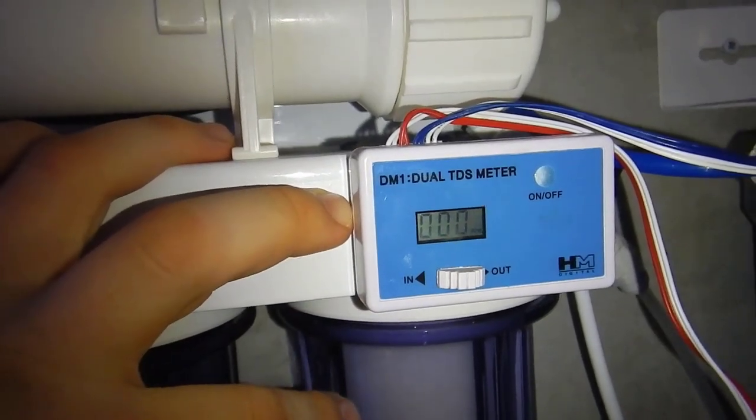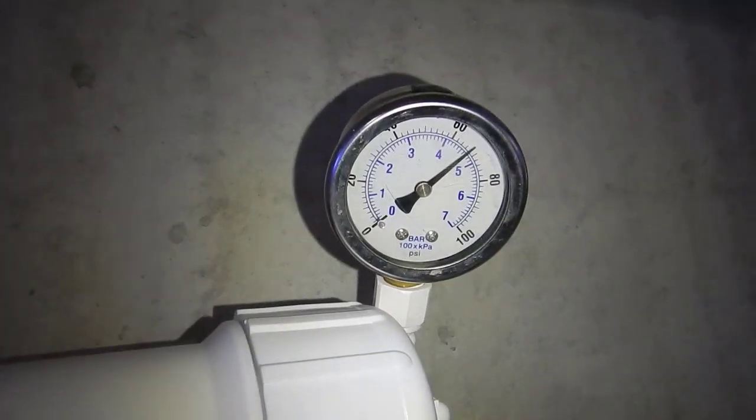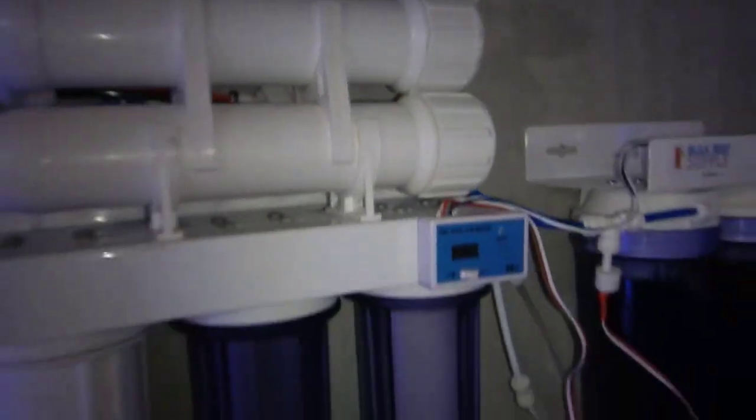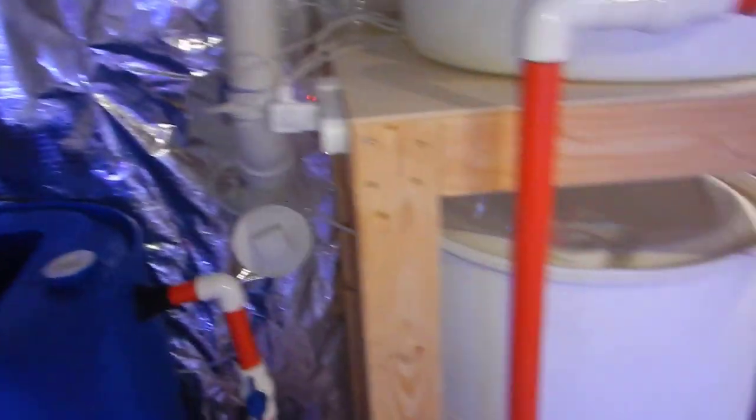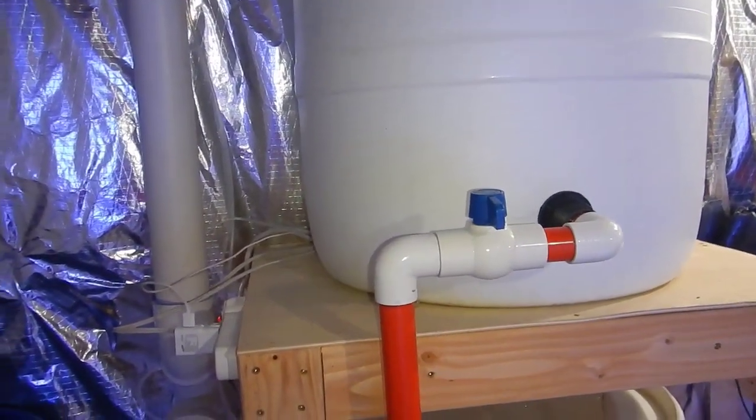So that will go ahead and fill up the bottom barrel. Now we're going to go ahead and use water from the top barrel to top off the ATO container for the frag tank. Let's go ahead and do that.